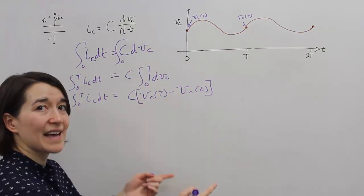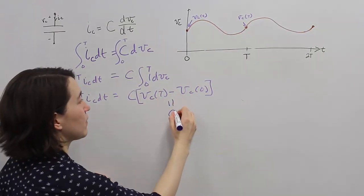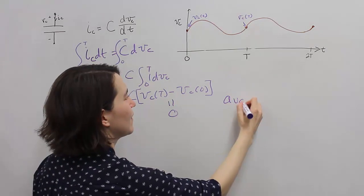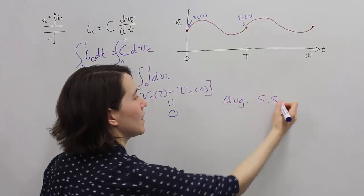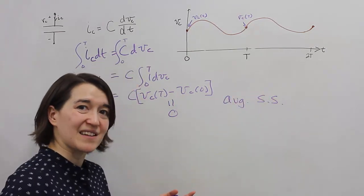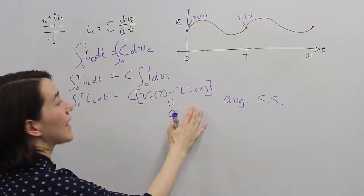So, the difference between this has to be 0. So, if we're in average steady state, some people call that DC steady state, same meaning, this has to be 0, this value.